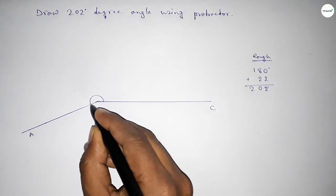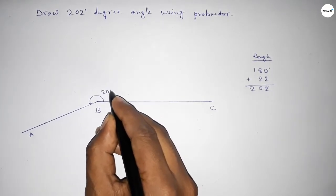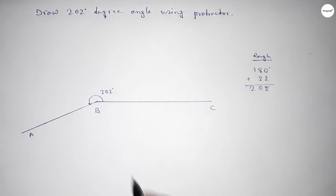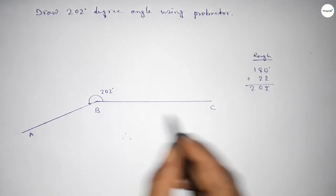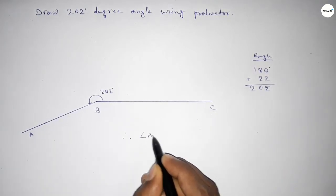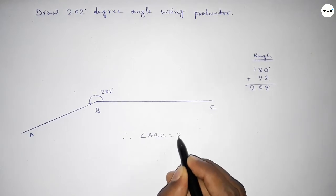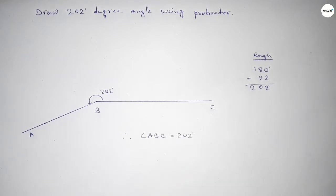So angle ABC is 202 degree angle. Therefore angle ABC equals 202 degrees. That's all, thanks for watching. Please share it with your friends.